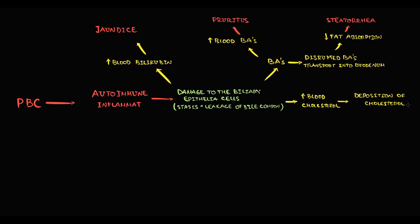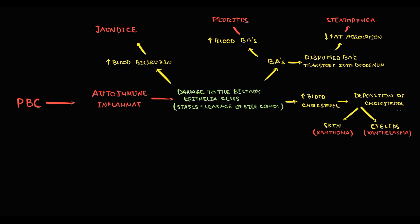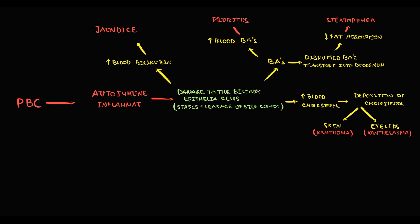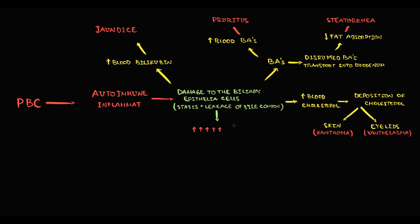Increasing blood cholesterol levels cause deposition of cholesterol in the skin, which we call xanthomas, and deposition of cholesterol in the eyelids we call xanthelasma. With severe damage to intrahepatic bile ducts, bile begins to accumulate — a condition called cholestasis — which provokes increases in blood alkaline phosphatase and gamma-glutamyl transferase levels.